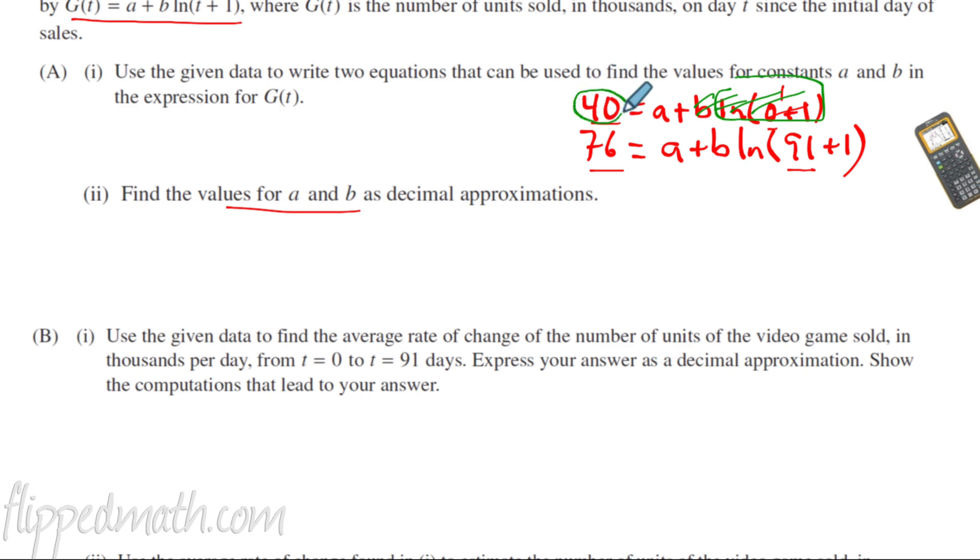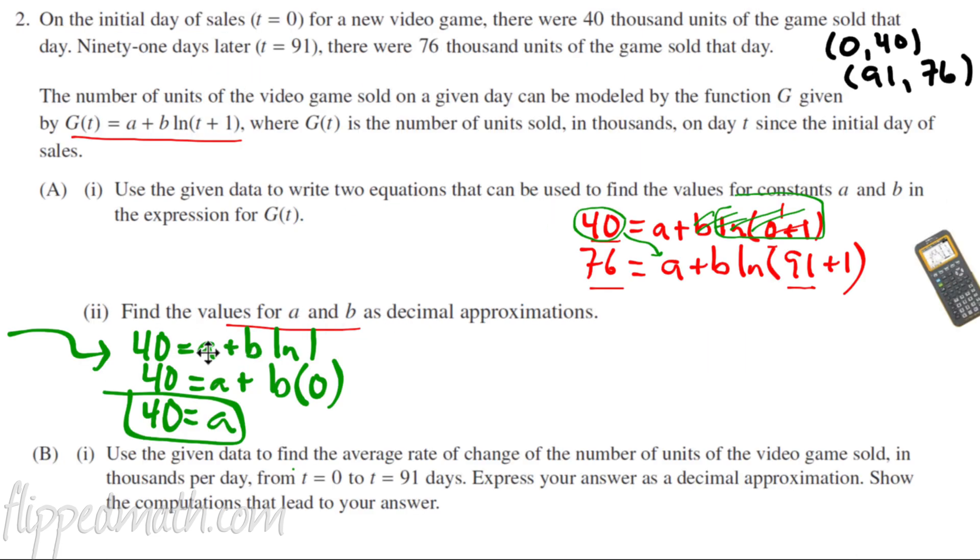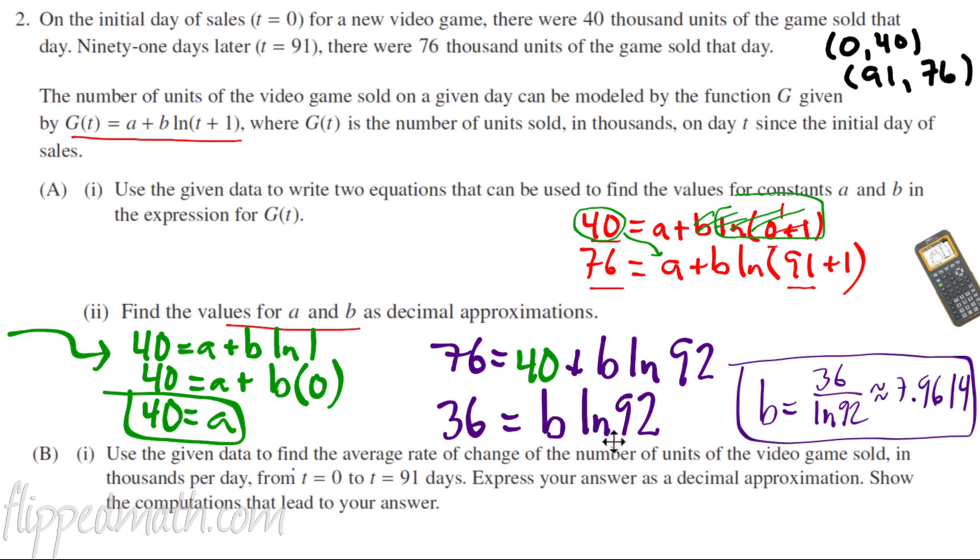Then you can take that 40. A is going to equal 40. And you plug it in right here. So in this equation here, we are showing that the natural log of one equals zero. That goes away. We get A equals 40. So then we go to the other equation with 76. We plug in a 40 for A. Subtract 40 from each side. You'll get 36 equals B times the natural log of 92. So when you divide both sides by the natural log of 92, you're going to get B equals 36 divided by the natural log of 92. That is 7.9614. Boom. We found A, 40, and B, 7.9614.